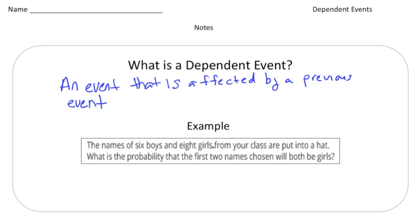Alright, so let's just jump into the first problem here and I'll show you how to find the probability of a dependent event. So it says the names of six boys and eight girls from your class are put into a hat. What is the probability that the first two names chosen will be both girls? Alright, so let's actually kind of role play here. Let's actually draw a hat. So there's the hat. And inside the hat, we know we're going to have six boys, so we'll say 6B for six boys. And then 8G for eight girls.